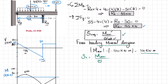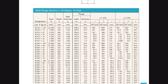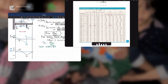The section modulus Sx equals the maximum bending moment divided by the allowable stress. For W250×58, we go to Appendix B and check the section table. From that table, Sx is 693×10³ cubic millimeters, the total depth is 252 mm, and the thickness of the web is 8 mm.